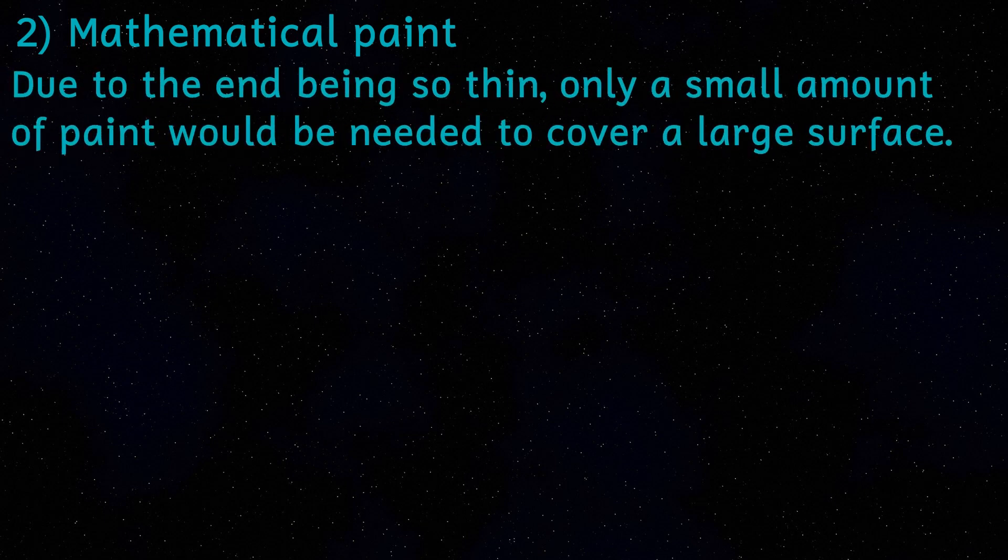Alternatively, we could assume that this is mathematical paint with zero thickness. And again, you could quite easily coat the inside with paint as long as the paint needed got thin enough quick enough. And this is in the same way as one of Zeno's paradoxes.